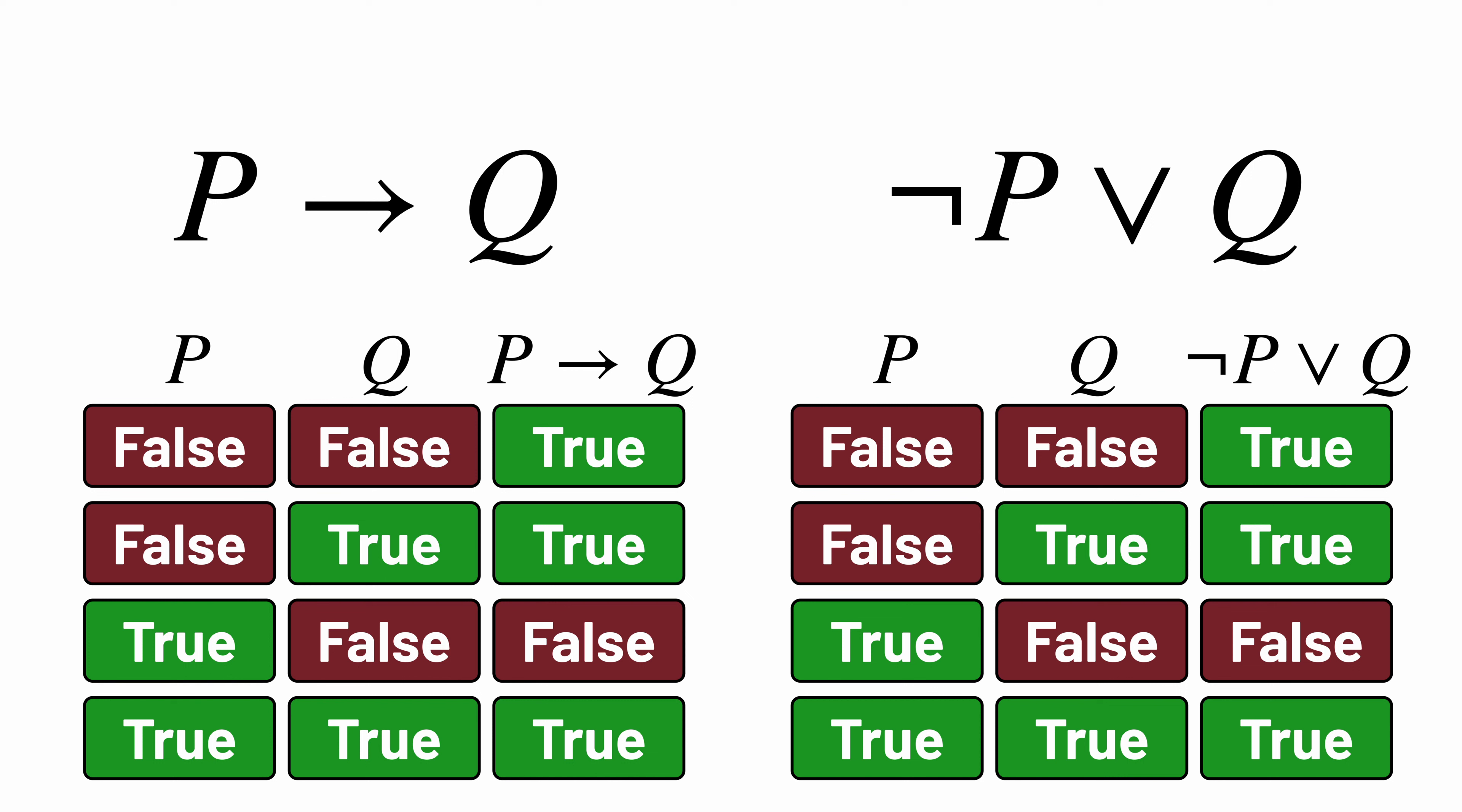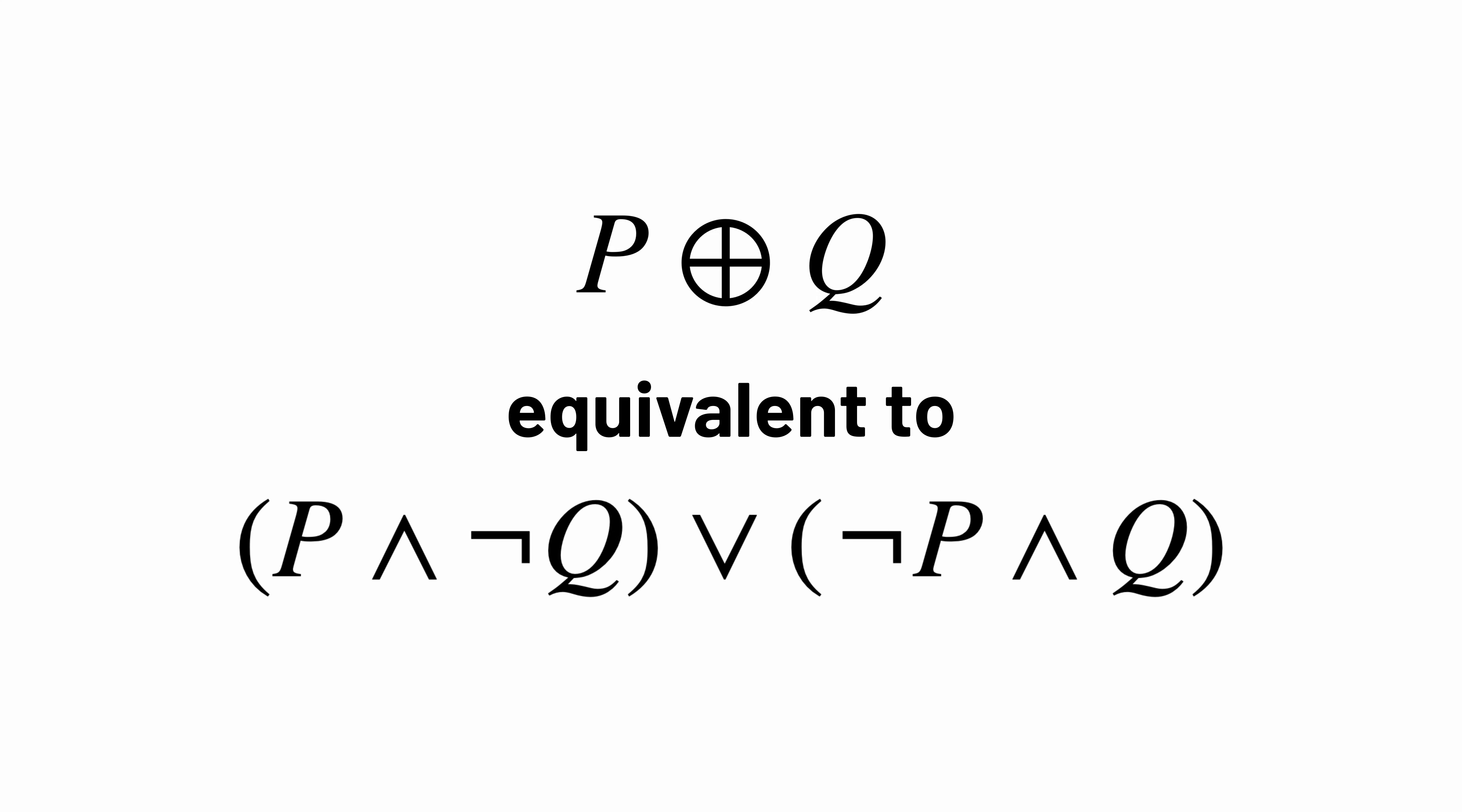Many logical formulas are equivalent to each other. For example, you might try on your own proving that P exclusive or Q means the same thing as P and not Q or not P and Q. And you can try on your own to find other logical formulas that are equivalent to both of these two.